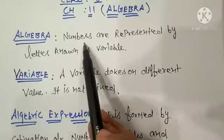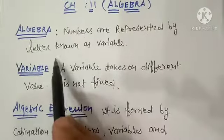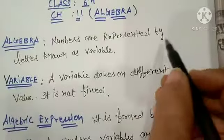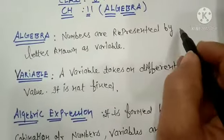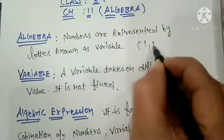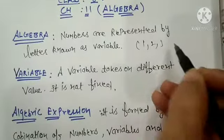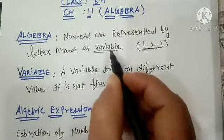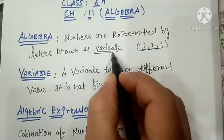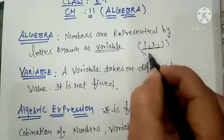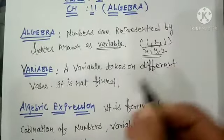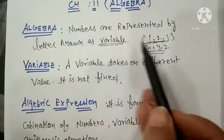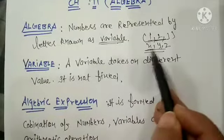In algebra, numbers are represented by letters known as variables, just as we normally work with numerical values — addition, subtraction, multiplication. Now we will use variables such as alphabets like x, y, and z. We will work with algebra just as we work with numbers, using variables.